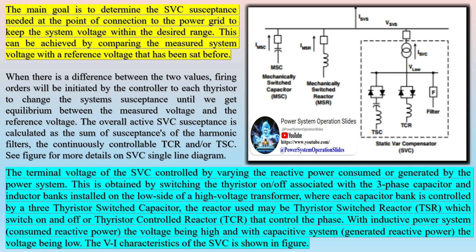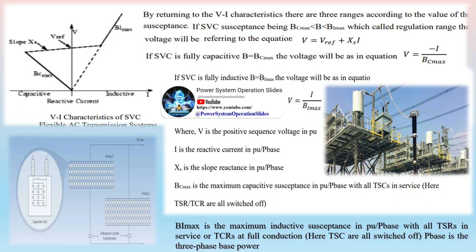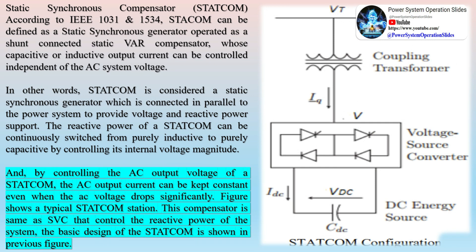The shunt compensator can also be placed at the end of the line in parallel with the load to prevent voltage instability caused by load variations or line outages. There are two methods of shunt compensation. The first is shunt capacitive compensation, where capacitors are connected in parallel with the transmission line and controlled through thyristors by controlling the firing angle. This method is mainly used when there is an inductive load connected to the transmission line where the power factor lags, and the shunt capacitors draw a leading current, improving the overall power factor.